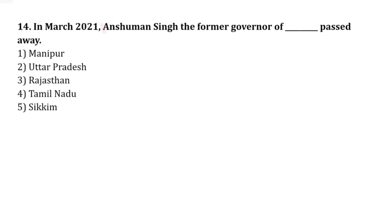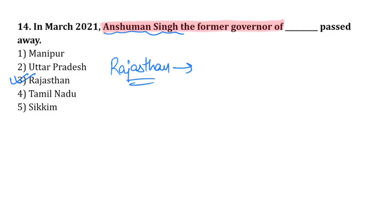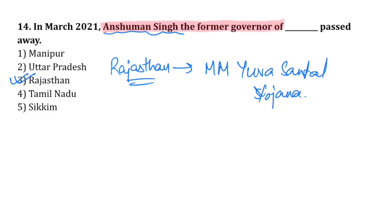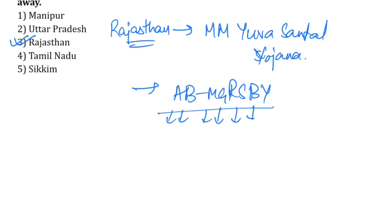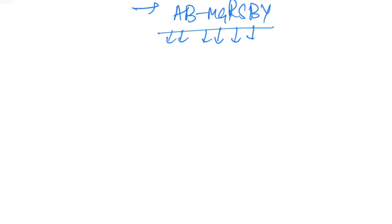In March 2021, Anushman Singh, the former Governor of Rajasthan, passed away. Important schemes launched by Rajasthan include: Mukhya Mantri Yuva Sambal Yojana; AB-MGRSBY, which stands for Ayushman Bharat Mahatma Gandhi Rajasthan Suraksha Bima Yojana; and the Nishulk Sanitary Napkins Distribution Scheme.